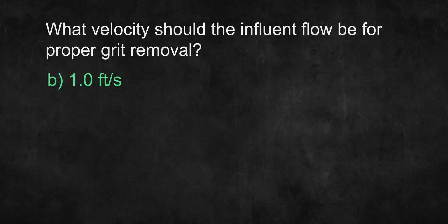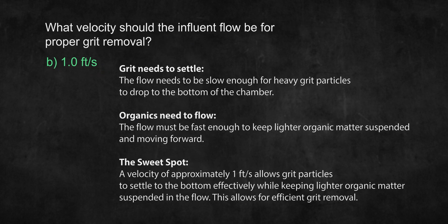The answer is B: 1 foot per second. Grit consists of heavier materials like sand, small stones, and other dense debris. To remove these, we need to strike a balance with the flow of the influent wastewater. If the velocity is too low, organic matter will start settling along with the grit, which is undesirable. On the other hand, if the velocity is too high, it will start scouring the already settled grit and carry it away, causing issues with downstream equipment and processes. A flow rate of around 1 foot per second creates ideal conditions, allowing grit to settle efficiently while keeping lighter organic matter suspended for proper separation during wastewater treatment.